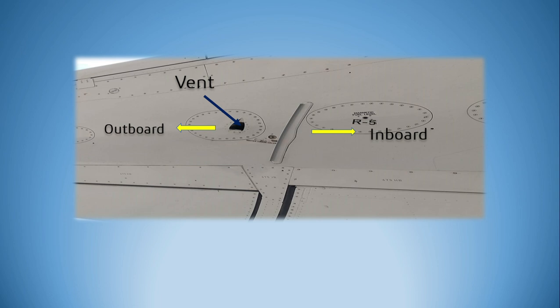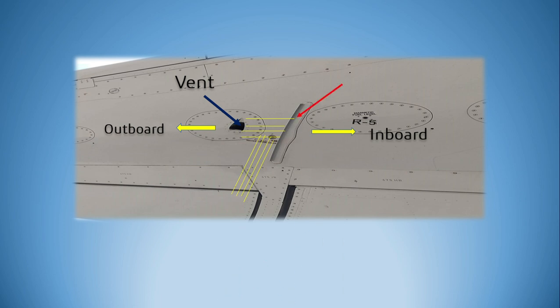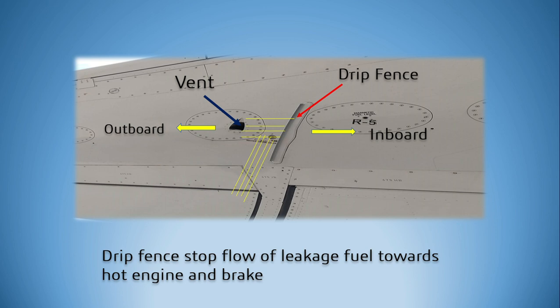Various measures have been taken to prevent fuel leakage via the wing tank vent; however, some leakage may occur. This fuel leakage can be due to overflow of fuel in the vent. To prevent the fuel leakage from migrating to hot surfaces such as the engine or brakes, drip fins are installed inboard of the wing, running in line with the direction of flight. The drip fins stop the flow of fuel leakage toward the engine or brakes, preventing a fire hazard condition.